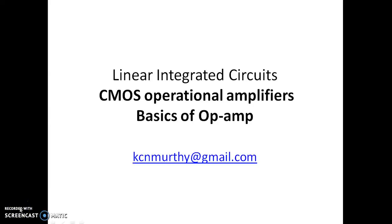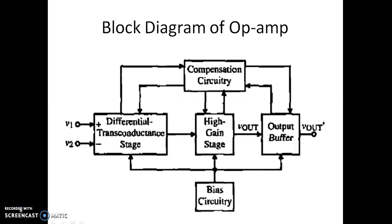In this video we shall see the basics of op-amp. The block diagram of op-amp consists of major blocks. The input stage is a differential transconductance stage. It has two input terminals, V1 and V2, which are the non-inverting terminal and the inverting terminal respectively. This differential transconductance stage is followed by a high gain stage, because the required high gain cannot be obtained using a single stage.